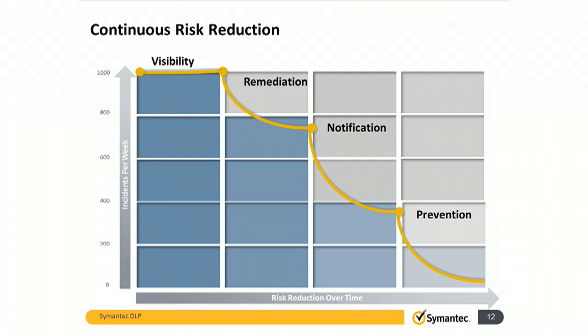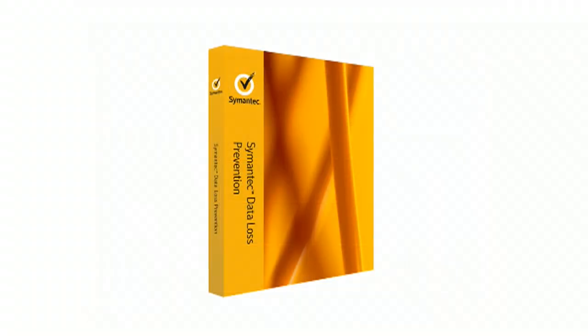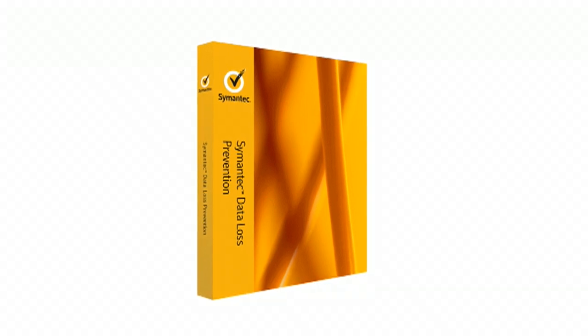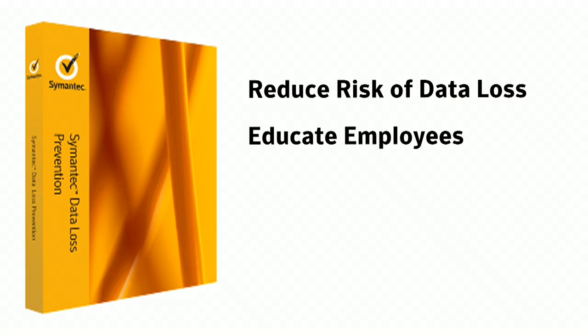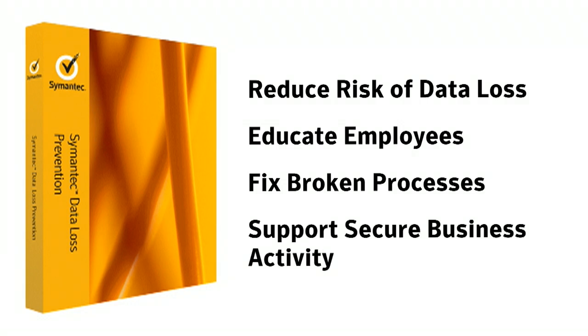With visibility, remediation, and notification, you will whittle down the number of incidents. The last step is prevention, stopping data from inappropriately leaving your network. Through a combination of blocking, quarantining, and conditional modification, Symantec DLP provides the tools to prevent data loss at every egress point. In summary, Symantec DLP can significantly reduce the overall risk of data loss. We help security teams to enable the business side by educating employees, fixing broken business processes, and supporting business activity to occur securely.